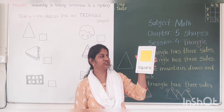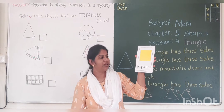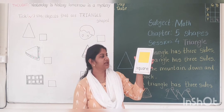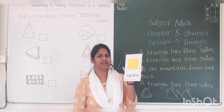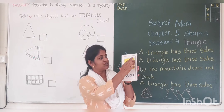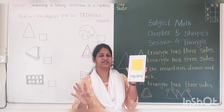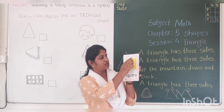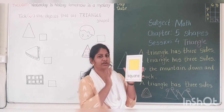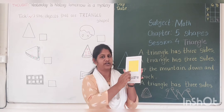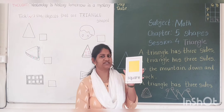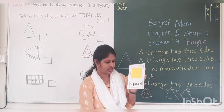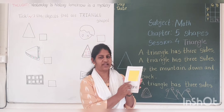Now tell me which shape is this? This is square. Square has how many corners? 4 corners. 1, 2, 3, 4. And 4 sides. 1, 2, 3, 4. 4 corners and 4 sides. Which color is this? This is yellow color. 4 corners and 4 sides. This is square. And this is circle.